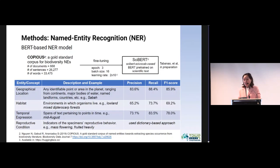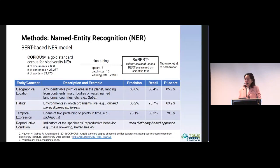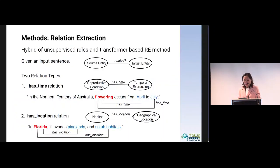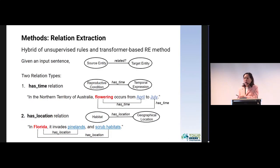We ran our fine-tuned SciBERT on the test set of COPIOUS and obtained F1 scores — the F1 score being the harmonic mean of precision and recall. For reproductive condition, we simply use a dictionary-based approach to identify mentions of reproductive conditions in text. Our relation extraction approach is unsupervised, meaning that even without a large amount of labeled data, we were able to extract relations from text. Just this week, I received a notification that our paper on this work has been accepted to an NLP conference.